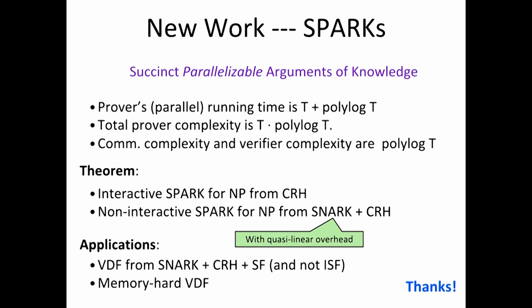And I also wanted to mention one new work that will appear in Eurocrypt that we have, same set of authors. We introduce a notion called sparks, standing for succinct parallelizable arguments of knowledge. This is just like snarks that you all know and love, but we want the prover's running time to be super fast. So we allow the prover to be parallelized. So the prover is going to be a parallel machine, even if the computation, the underlying computation is not parallel.